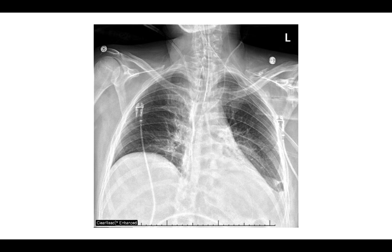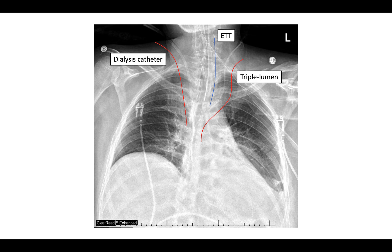This chest x-ray demonstrates multiple lines and tubes. It depicts an endotracheal tube, a dialysis catheter (Mahurkar) in the right internal jugular, a triple lumen catheter in the left internal jugular, and an orogastric tube in the stomach. Note that the dialysis catheter is visibly wider than the triple lumen.